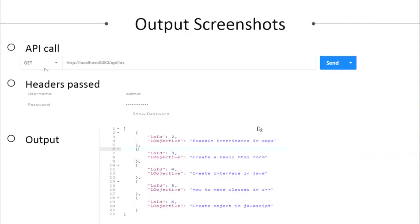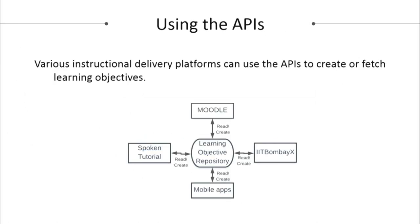This is an output screenshot showing how to call an API. The method is GET and the API is /api/los, which fetches learning objectives from the repository. We use basic authentication, so a username and password must be passed as a header with each request. The output is a list of learning objectives stored in our database, displayed in JSON format. These APIs can be used by any instructional delivery platform — for example, IIT Bombay's Spoken Tutorial platform or any mobile or web application can be integrated with our repository using REST APIs.